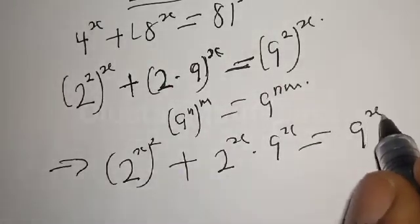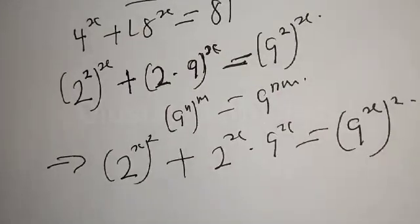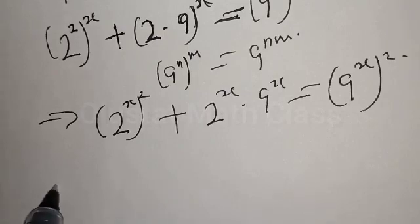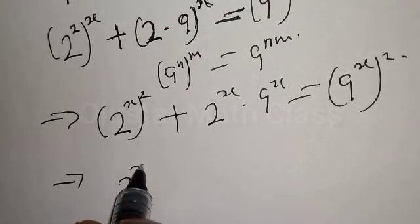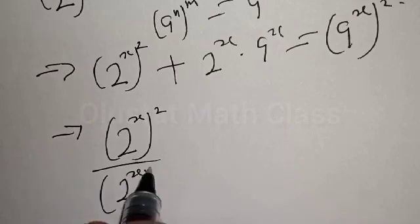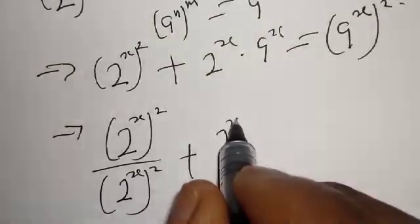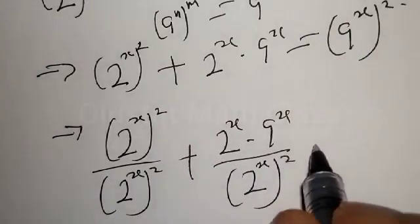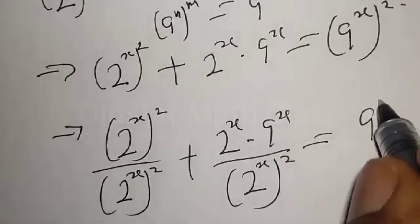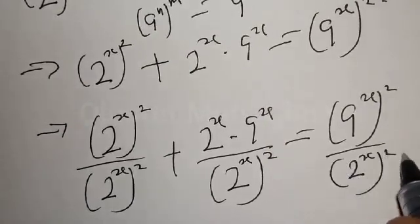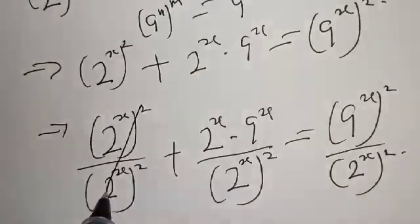Now let's divide both sides by 2 raised to power 2x. This gives us: 2 raised to power 2x over 2 raised to power 2x, plus 2 raised to power x times 9 raised to power x over 2 raised to power 2x, is equal to 9 raised to power 2x over 2 raised to power 2x. The first term cancels to give 1.